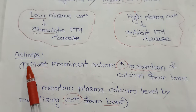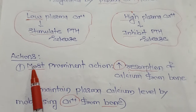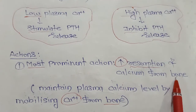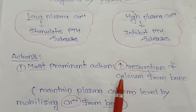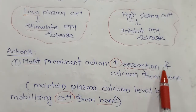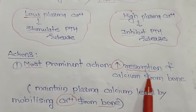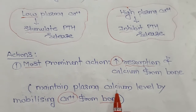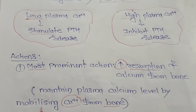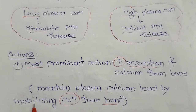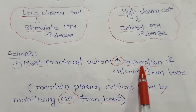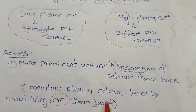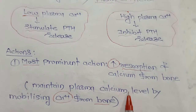What are the various actions of parathyroid hormone? The most prominent action is that it increases resorption of calcium from the bone — in other words, it mobilizes calcium from the bone. This mobilization or resorption of calcium from the bone is how PTH maintains plasma calcium levels.